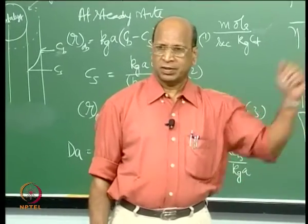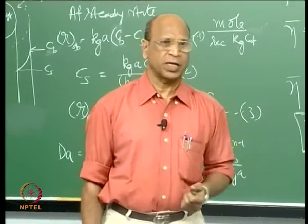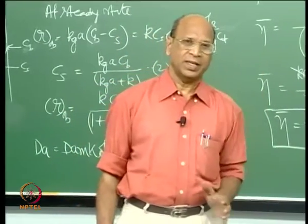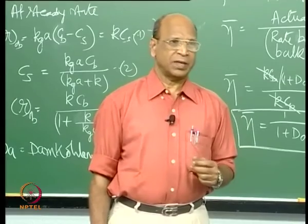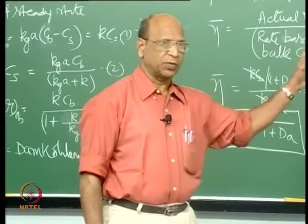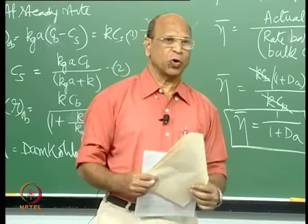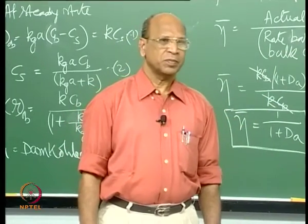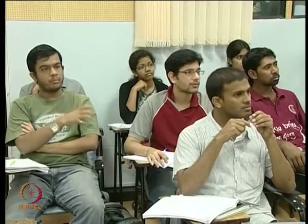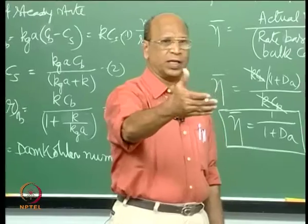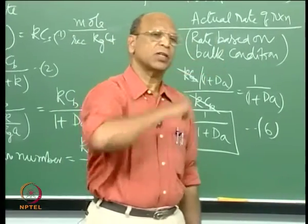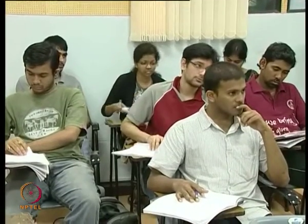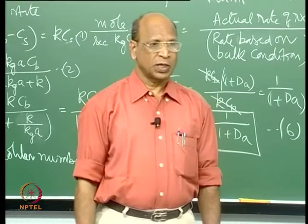By the way, what is the order of reaction in Langmuir-Hinshelwood-Hougen-Watson kinetics? For LHHW kinetics you cannot say a definite order unless you use a power law model — rate equals K times C_A^α times C_B^β. The order concept is purely for the power law model. For the LHHW rate equations, with concentrations of both reactants in numerator and denominator, you cannot assign a single order unless you neglect certain denominator terms.